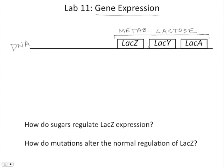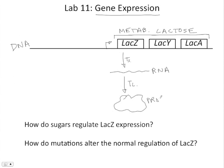Even though there are three genes here, we're really just going to focus on the first one, the LAC-Z gene. We can draw a little symbol here to represent the place where transcription of that gene is going to start. So if this gene gets transcribed — TS is my abbreviation for transcription — it's going to be transcribed to make an RNA molecule, and then translated by a ribosome to make a protein. The enzyme that is synthesized here is called beta-galactosidase, or beta-gal. The LAC-Z gene encodes the beta-galactosidase enzyme.